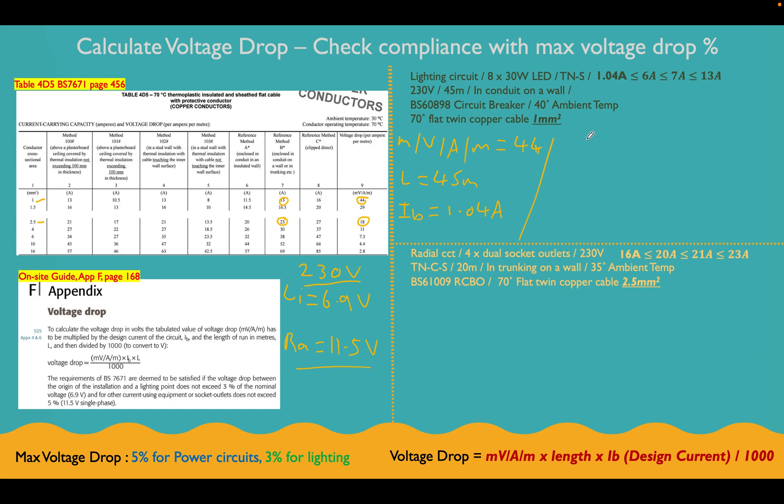So let's put that into our formula now just so we can see what we're going to do. So the voltage drop is going to be equal to the millivolt amp per meter value, 44, multiplied by the length, which is 45, multiplied by the design current, which is 1.04. And we're going to divide all of that by 1000. And that's going to give us a value of 2.05 volts.